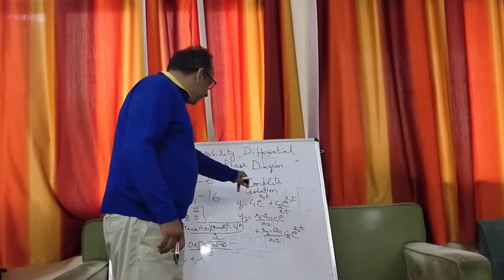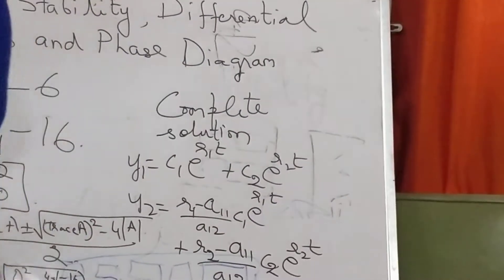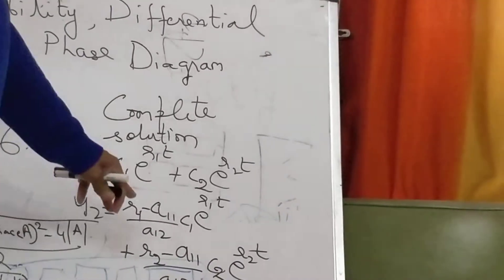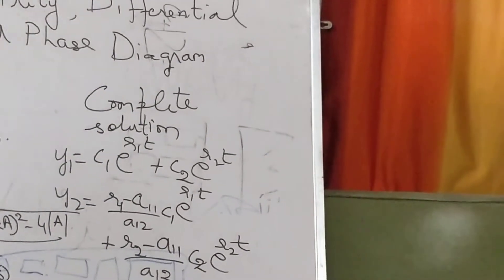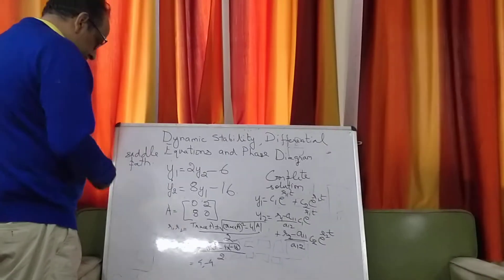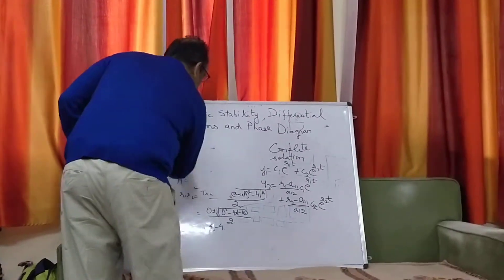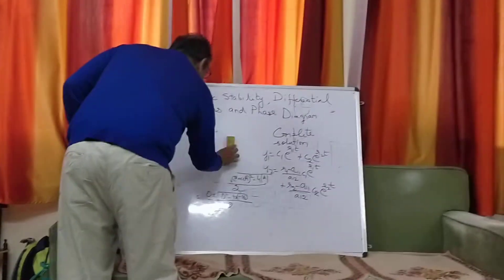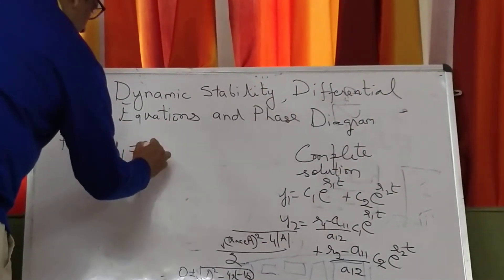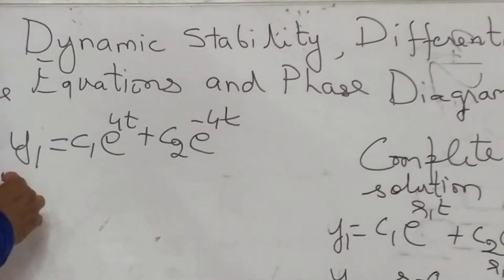Now, the complete solution for real and distinct roots works out to be: y1 equals c1·e^(r1·t) plus c2·e^(r2·t), and y2 equals [(r1 minus a11)/a12]·c1·e^(r1·t) plus [(r2 minus a11)/a12]·c2·e^(r2·t). I am going to write the solution and then draw the phase diagram associated with it.